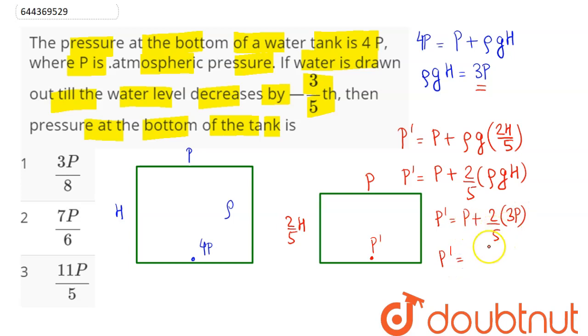This comes out to be P dash equals 5P plus 6P is 11P divided by 5. So 11P/5, that is option number 3 is the correct answer.